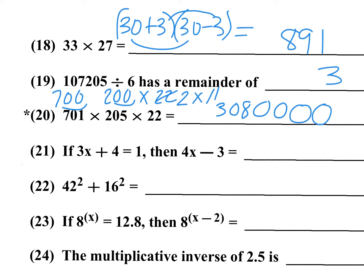Bonus problem A — Number 23: a to the x equals 12.8, what is a to the x minus 2? That's multiplying by a to the negative 2, which for base 8 is 1 over 64. So 12.8 divided by 64 — but this is actually 0.2 (one-fifth) because of the decimal. The answer is 0.2.